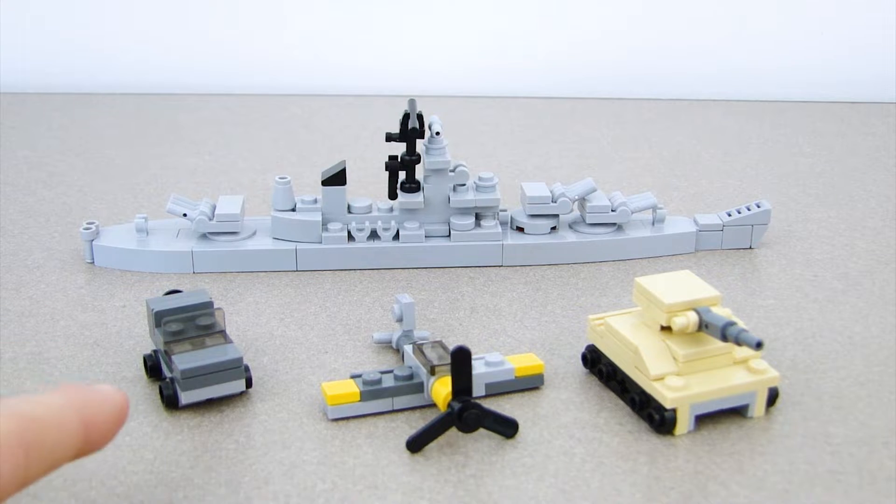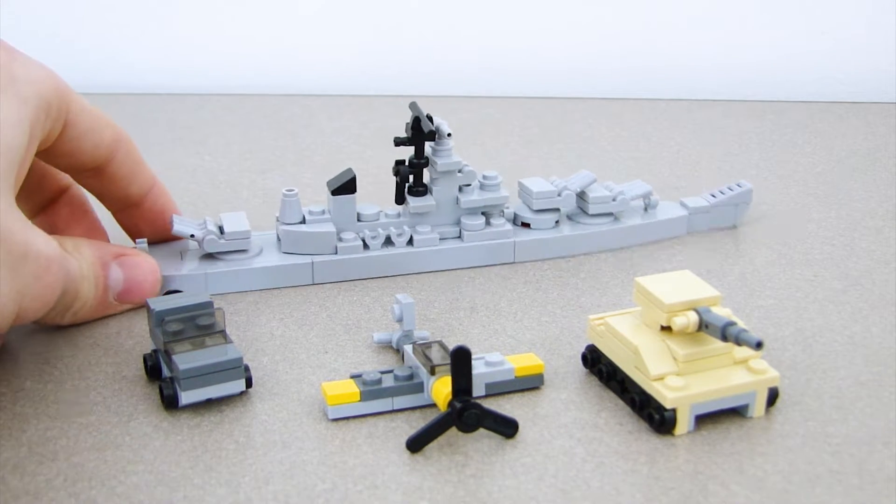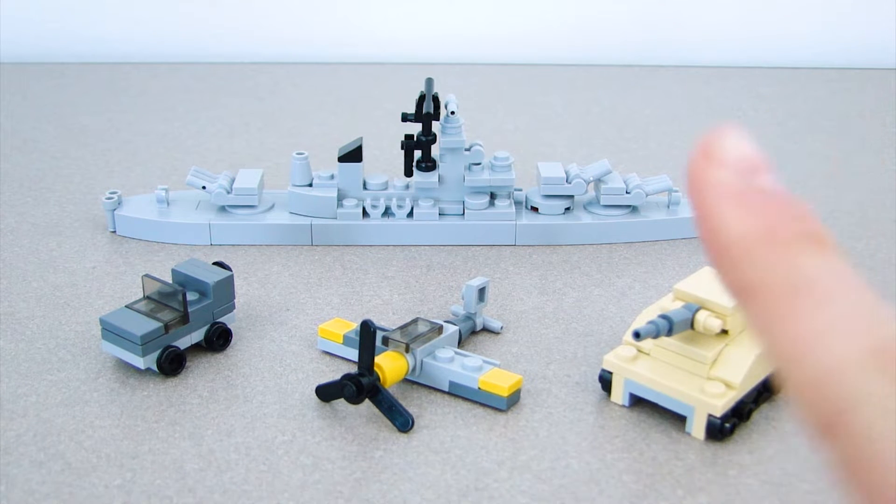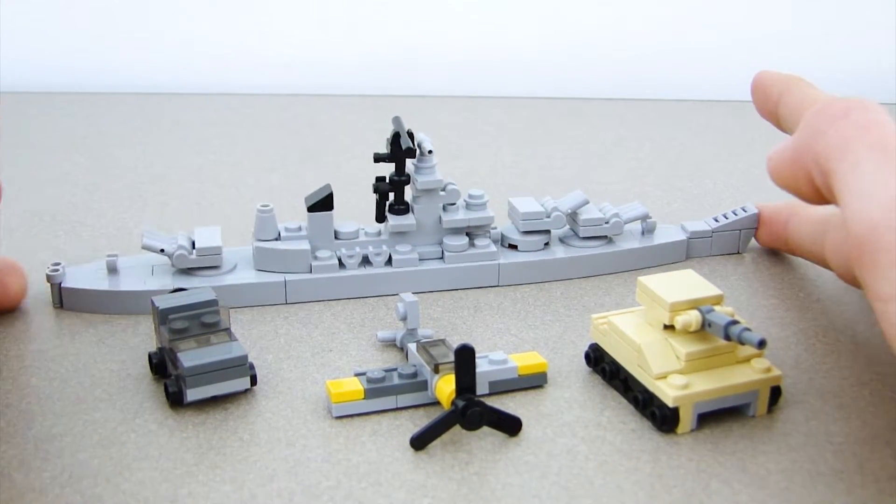So the vehicles are a Willys Jeep, a BF-109, a World War II tank, and the USS Missouri. All the tutorials in this video will also be available as instructions on my website, which will be linked up here in the corner and down in the description. There'll be a special way to get the instructions for this one, so make sure to stick around until the end.